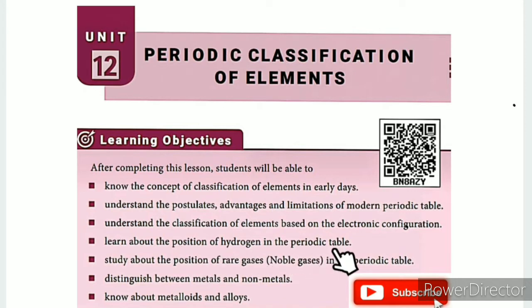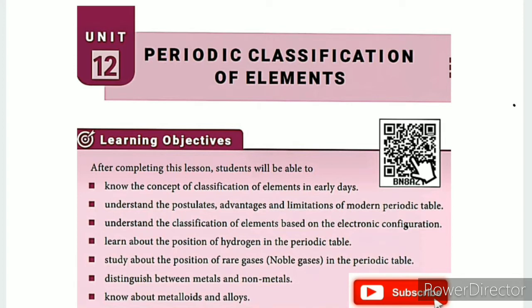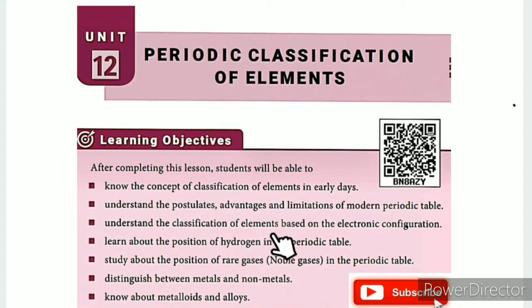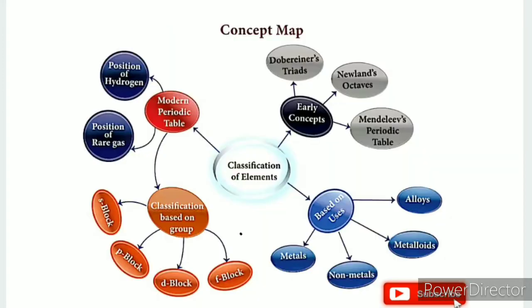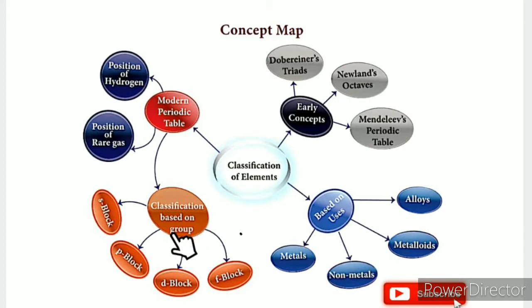Know about metalloids and alloys. These are the learning objectives. There is a QR code ICT corner link and a description box in the unit guide. If you have a topic, there will be one-word questions and you can try to find out the concept map. Classification of elements - early concepts. Now we will see the modern periodic table.